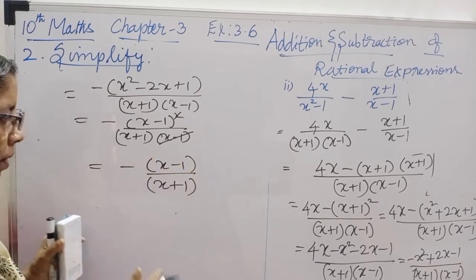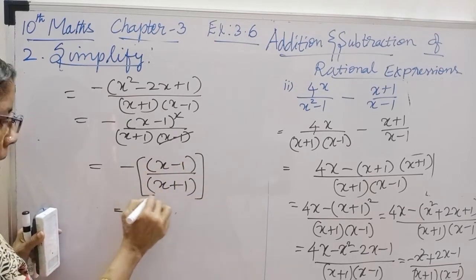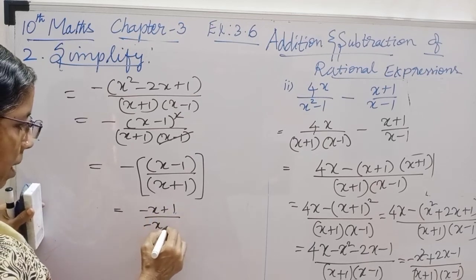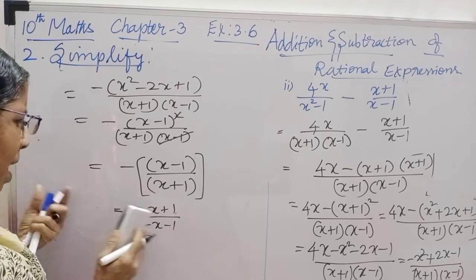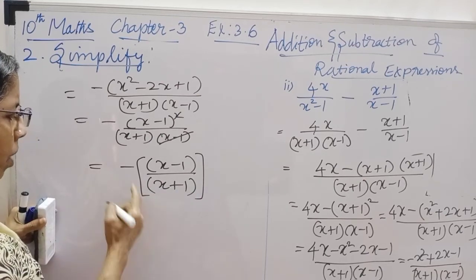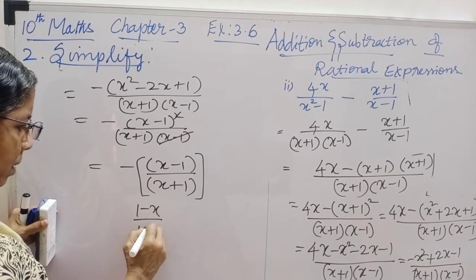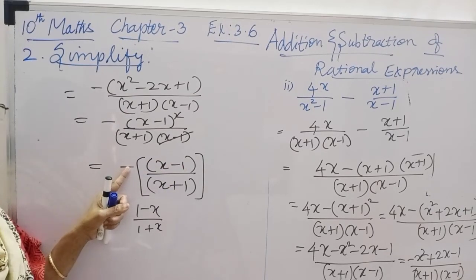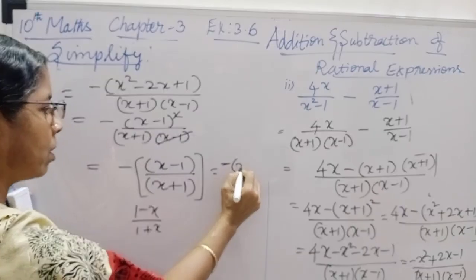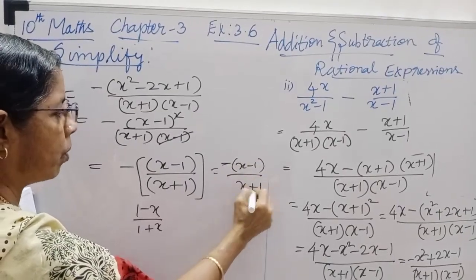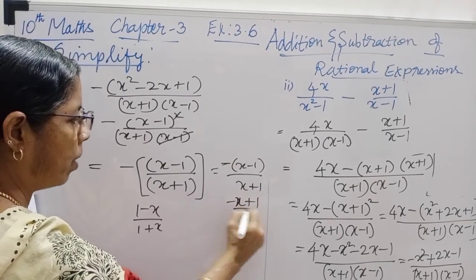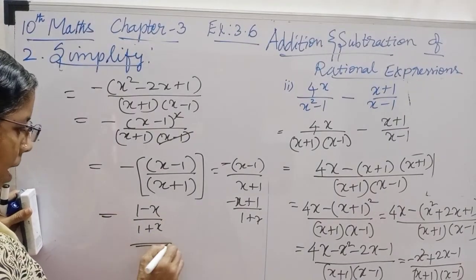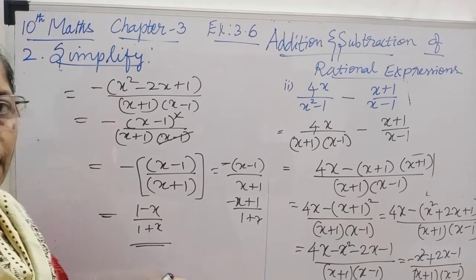This will give minus of x minus 1 by x plus 1. So, minus of x plus 1 is minus x plus 1 by x plus 1. Multiplying the numerator alone with the negative sign, this will have minus of x minus 1 by x plus 1. So the final result is minus 1 minus x, which simplifies accordingly.